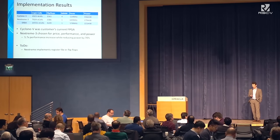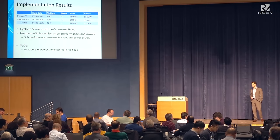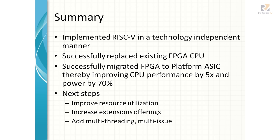There's still more work to do — we need to optimize the register files and get the design smaller, but that's all in the pipeline. To summarize: we implemented the RISC-V in a technology-independent manner. RV11 is our first implementation, with others on the drawing board, including a two-issue dual-thread CPU we're working on, and potentially an out-of-order one if required. We successfully replaced the FPGA CPU using RISC-V, the customer is happy, and we were able to reduce their power and price on the current implementation.